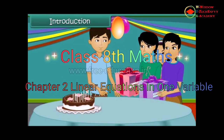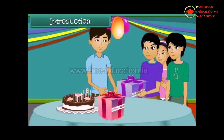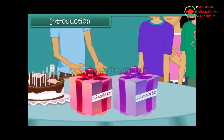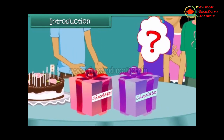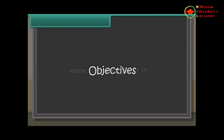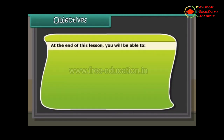On your birthday, one of your friends gives a box of chocolates, another friend gives another box of chocolates as a birthday gift. Without opening the box, we cannot find the total number of chocolates. In these cases, we use variables for the unknown number of chocolates. By solving the equation formed, we can find the number of chocolates, which is the unknown.